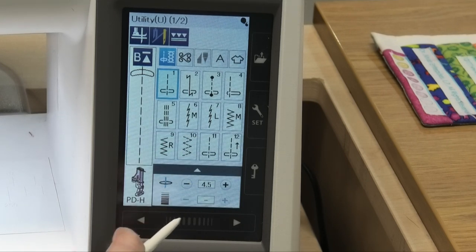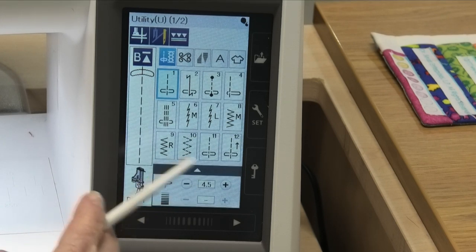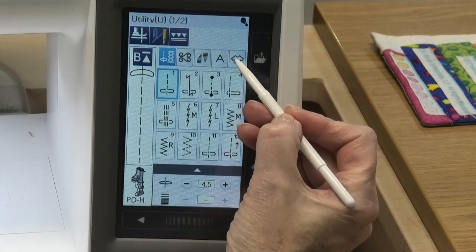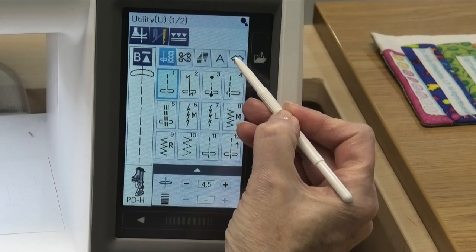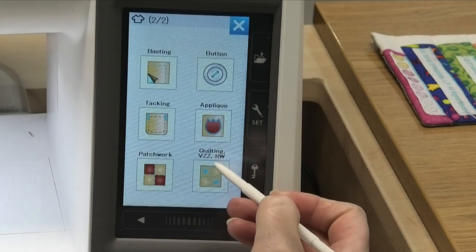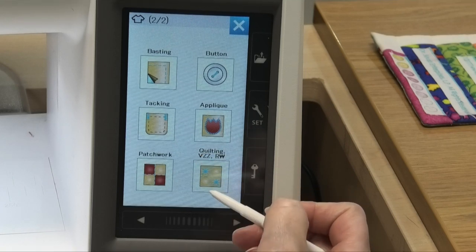Okay, so let me tell you what I've got on here. You can see I've got the PDH foot here it tells me already and I have my regular stitch plate on. Now we want to go into the area that talks about free motion quilting. So we're going to hit our sewing application icon which looks like a t-shirt and we're going to use our arrows here to scroll through until we get to the quilting VZZ which is variable zigzag and RW which is ruler work. Not enough room to put all that in there that's for sure.